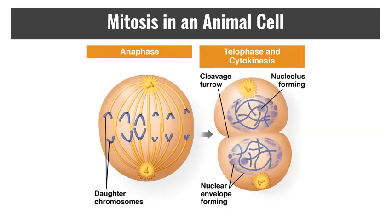During anaphase, the proteins that hold the centromere together are divided, and the chromosomes begin to move toward opposite poles. The non-kinetochore microtubules push against each other and elongate the cell, expanding the central space.